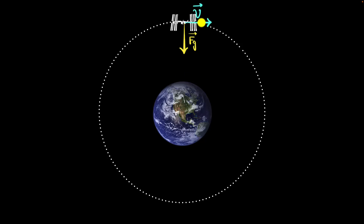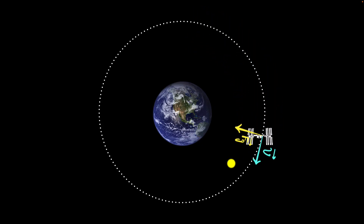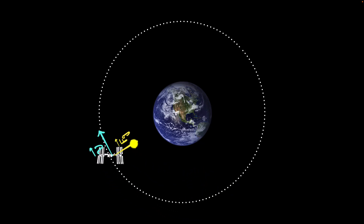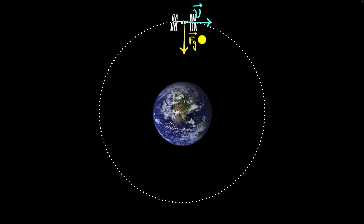If a satellite has just the right velocity, then we can make sure that the force of gravity will always stay perpendicular to that velocity vector, and in that case the satellite will go in a perfect circular orbit because the gravitational force will act like a centripetal force. We've seen this before in our previous videos. Now the goal of this video is to use insights from this and understand how planetary orbits work and talk about Kepler's laws.